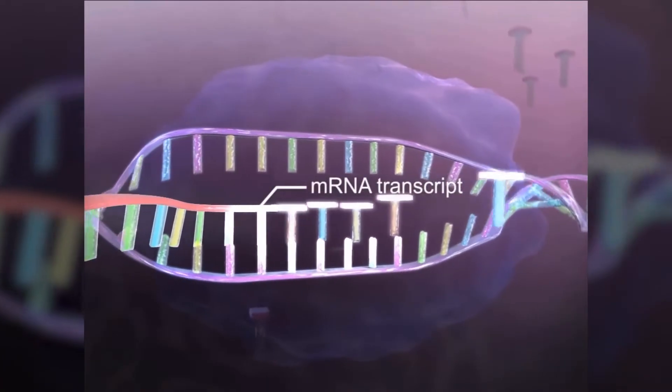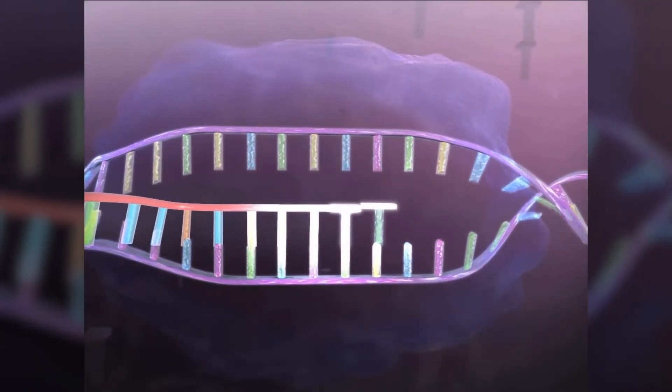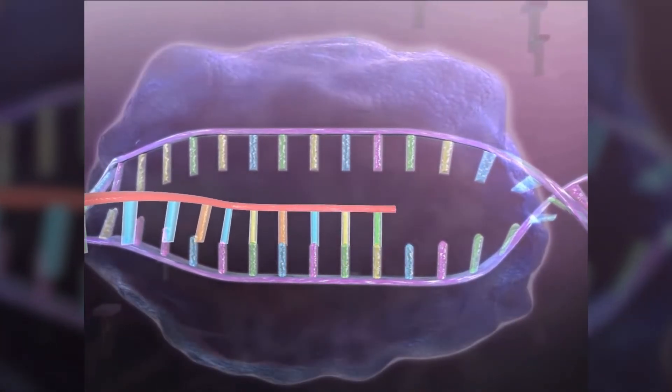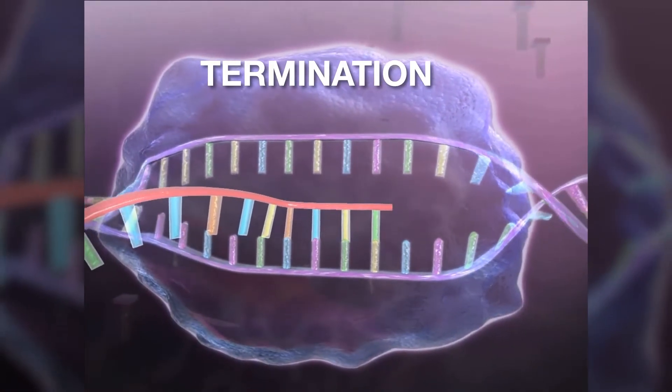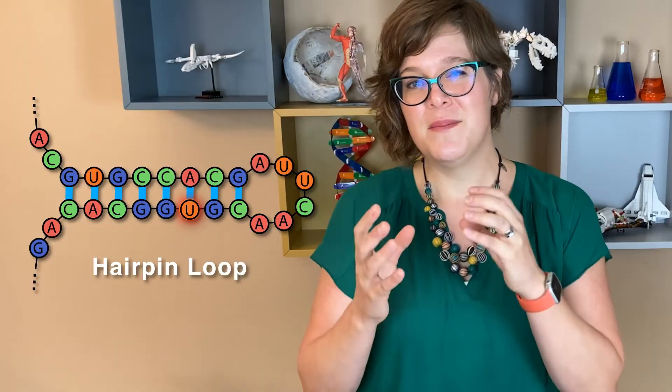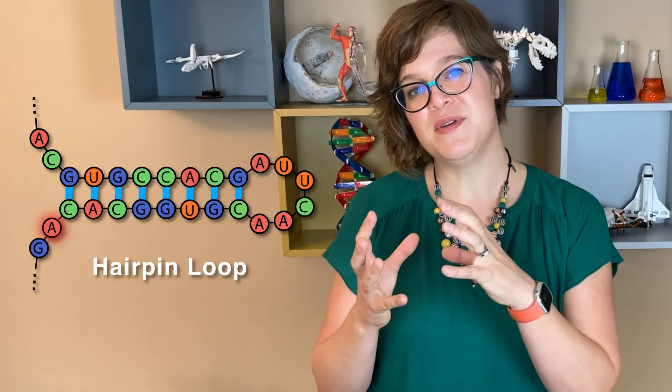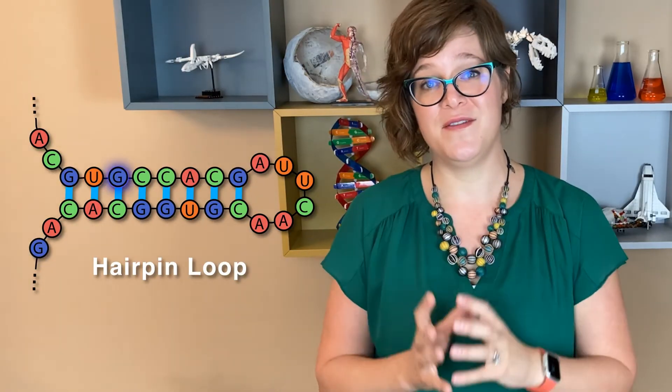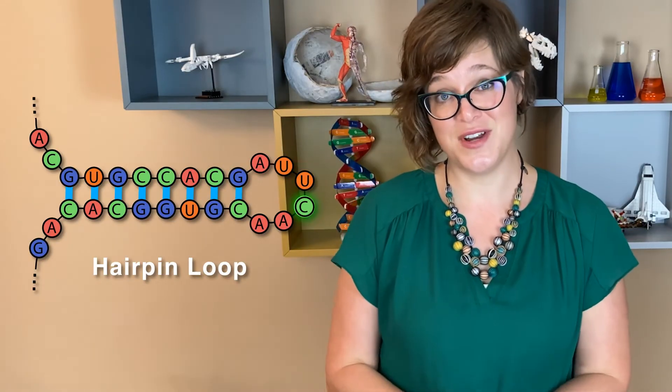Transcription is going to continue like this until that RNA polymerase reaches a sequence of bases that tells it to terminate. One of the ways that this termination happens is that the final sequence is rich in cytosine and guanine. Since the cytosine and guanine on the mRNA are a little attracted to each other, they create kind of a loop — we call it a hairpin loop. This hairpin loop makes it so that the RNA polymerase falls off of the DNA template strand, ending the transcription.